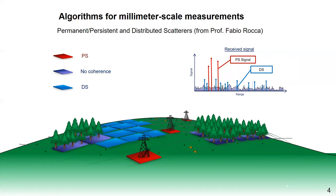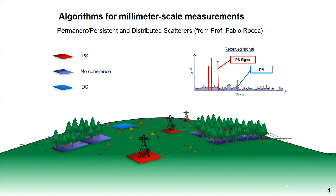We cannot measure displacement in the forest, at least in the current situation with satellites from space. In the future — around 2023 or 2024 — we will have the BIOMASS mission. With the P-band, we have a wavelength of about 69 cm. In that case, we can do something for displacement in forest areas, but not at the moment.